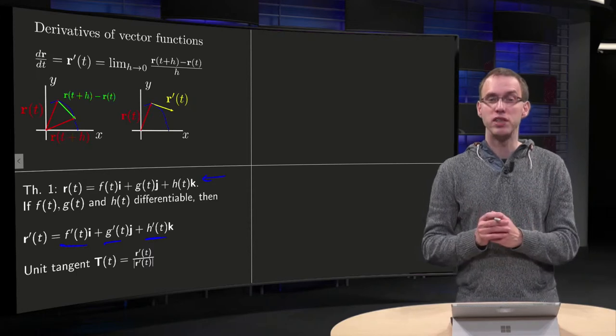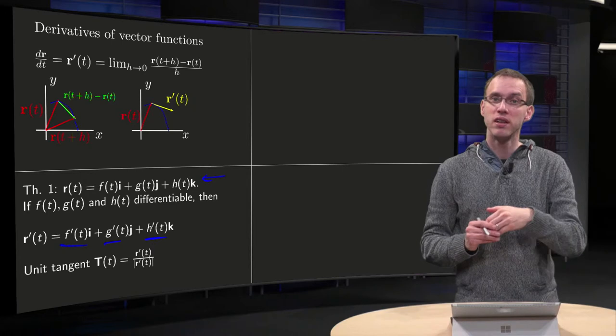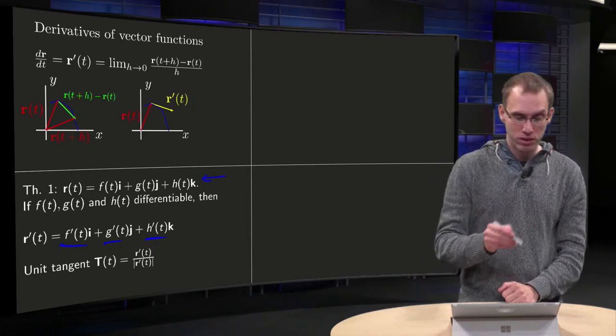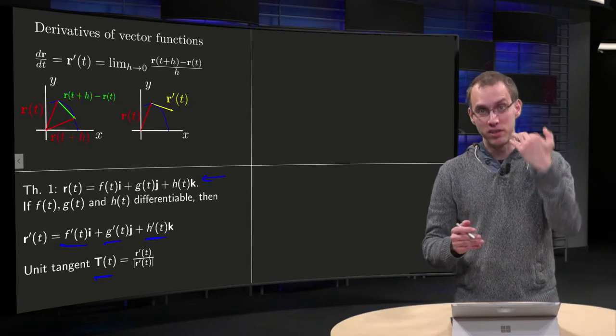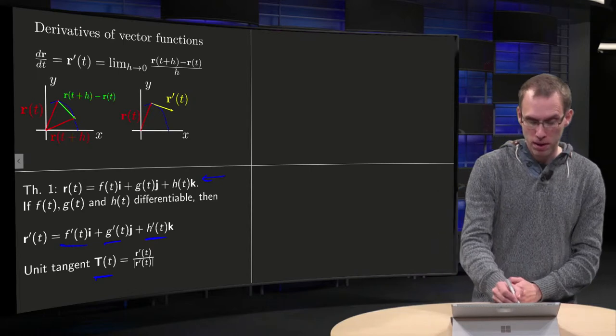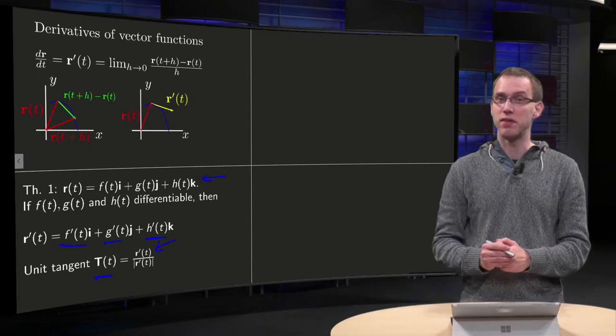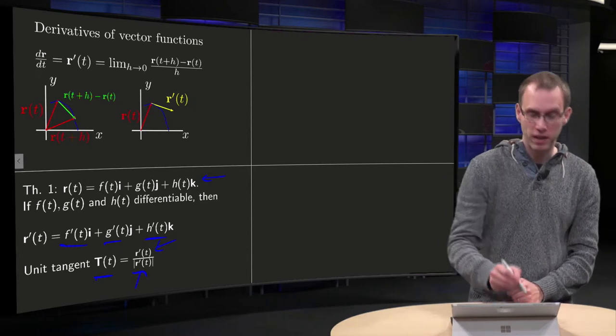And then one more definition: we have seen that the r' will give you a tangent vector, and it is often useful to define a unit tangent vector, so not just any tangent vector, but a tangent vector with length 1. The r' is a tangent vector, and you turn it into a unit tangent vector by just dividing by its length.